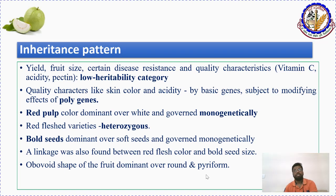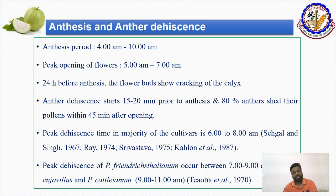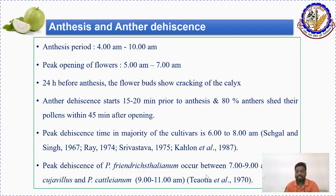Regarding floral biology, anthesis time — meaning the opening of the flower — is from 4 AM to 10 AM, with the peak time between 5 AM and 7 AM. Twenty-four hours before anthesis, the flower buds start cracking the calyx. This calyx crack stage is important for hybridization — emasculation should be done at this stage.